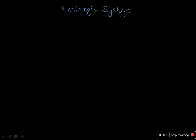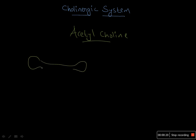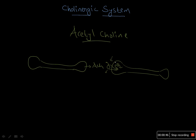Let's talk about the cholinergic system. The main compound that comes to mind is acetylcholine. A neuron capable of producing acetylcholine is called a cholinergic neuron. A receptor that can sense the presence of acetylcholine and send intracellular signals is called a cholinergic receptor. The cholinergic system comprises cholinergic neurons that can produce, reuptake, and resynthesize acetylcholine, along with cholinergic receptors.